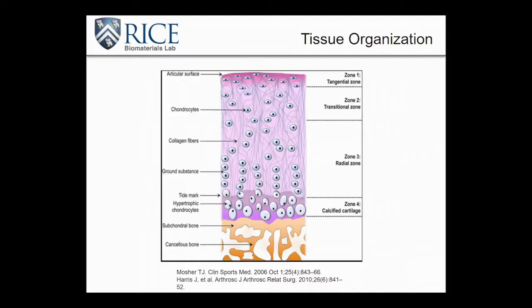This is an osteochondral interface, for example, and you can see that in the different zones you have extremely different cell populations, different organizations in the extracellular matrix, and different mechanical properties throughout this structure. Almost all tissues that we're interested in moving forward in biofabrication are comprised of several levels of structural hierarchy. It's extremely important that we remember this when applying it to biofabrication, because we do have the ability to start replicating some of these zonal organizations of tissues. Otherwise we're really not doing much better than some of the traditional tissue engineering techniques.